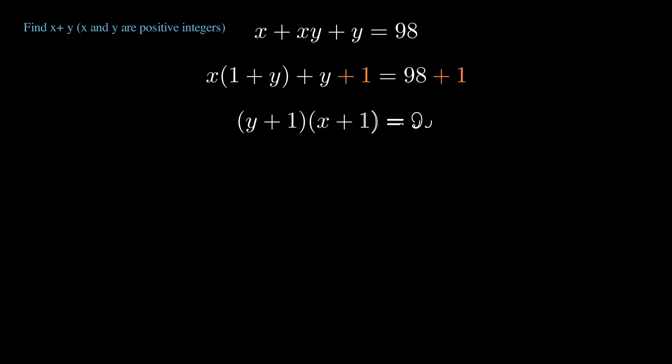Now we can factor y plus one out from both terms and we have a product equaling 99. And so we should think to ourselves, what are the factors of 99 that this product would be made up of?